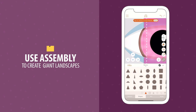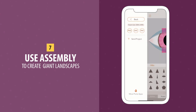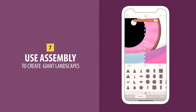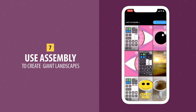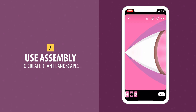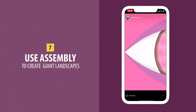Number 7. Why not break free from the constraints of your vertical layout? Create a panoramic image in Assembly and then divide it up in your Stories to create a giant window.